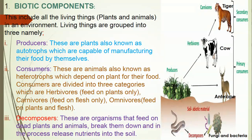Decomposers are organisms that feed on dead plants and animals. When plants and animals die, microorganisms in the soil break them down — they feed on them, cause them to decay, and at the end nutrients are released into the soil. Looking at the image: grasses are the producers; herbivores such as cows and antelopes are the primary consumers; carnivores like tigers and lions are the secondary consumers. We can also have tertiary consumers. Decomposers such as fungi, bacteria, and larger decomposers like earthworms break down the dead matter and release nutrients back into the soil.